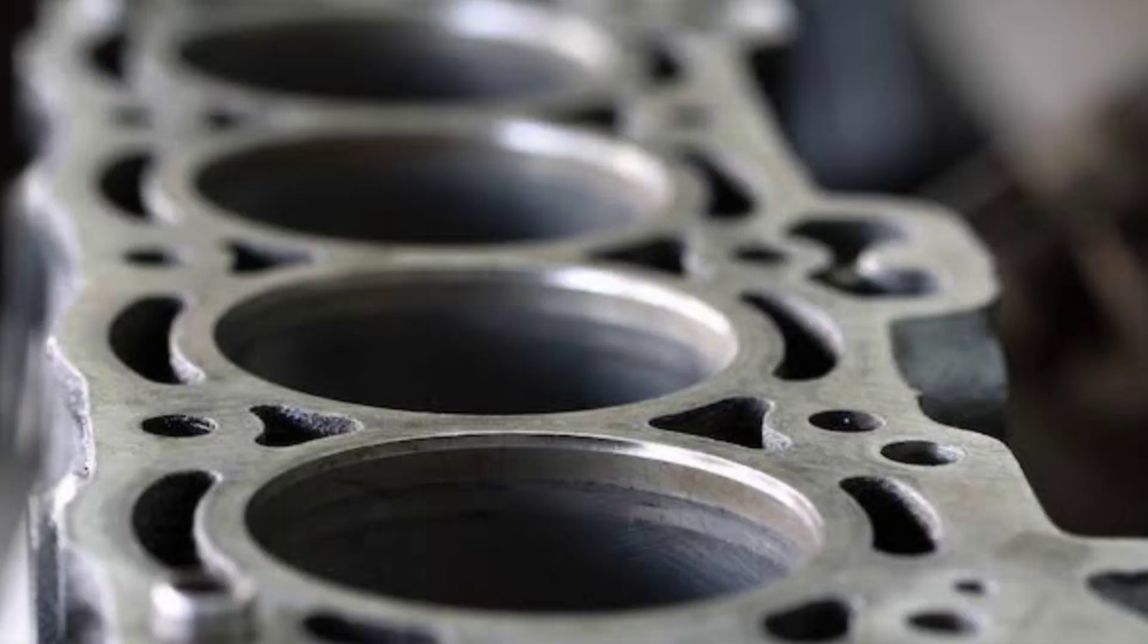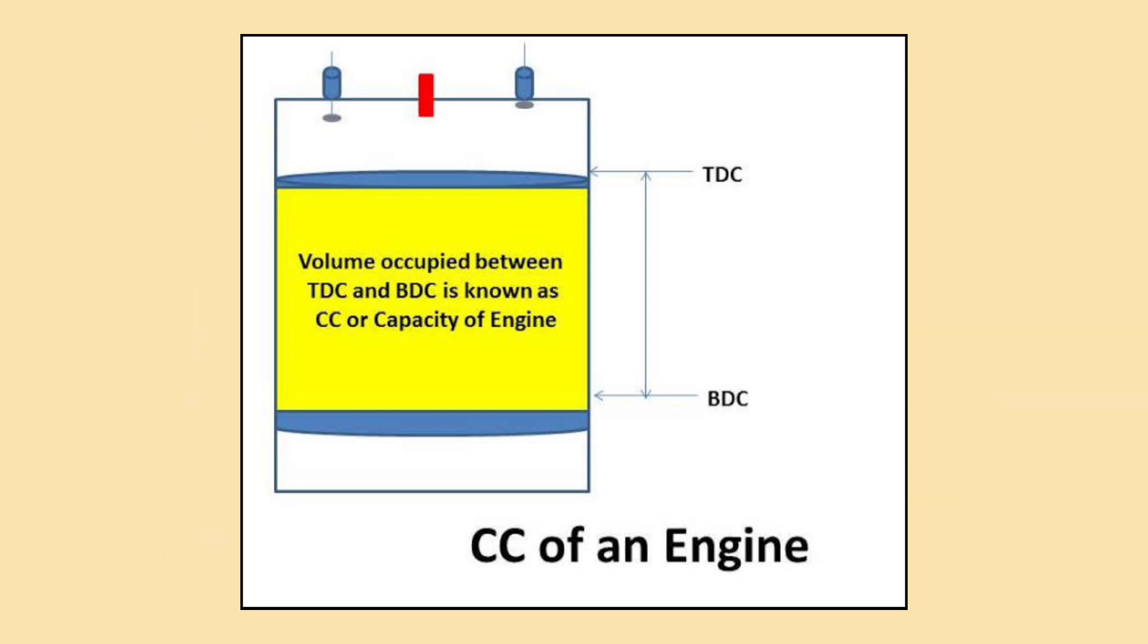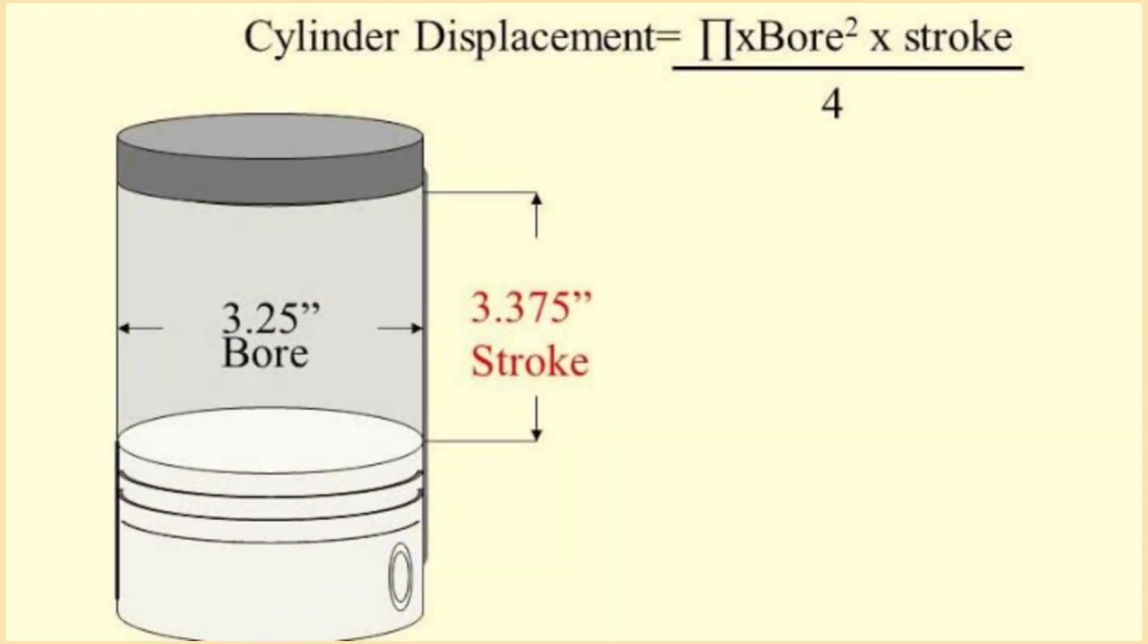Engine displacement is the total volume of all the cylinders in an engine, usually measured in liters or cubic centimeters. Bigger displacement engines can burn more fuel and produce more power, which is why larger engines are often found in performance cars.